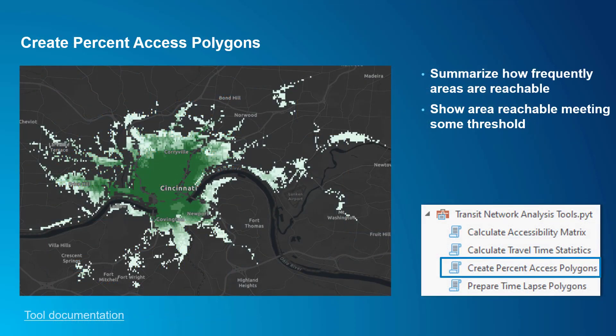The Create Percent Access Polygons tool helps you create typical access polygons that better represent the area reachable by transit across a time window. The tool overlays service area polygons from multiple times of day and summarizes them in terms of the number or percentage of input polygons that cover an area. Areas covered by a larger percentage of input polygons were reached at more start times and are consequently more frequently accessible. The tool output shows you the percentage of times any given area was reached, and you can choose to summarize results for different percentage thresholds — for example, what area can be reached at least 75% of start times.